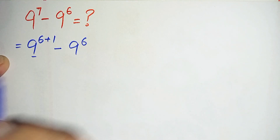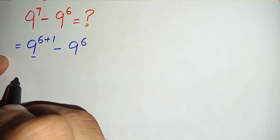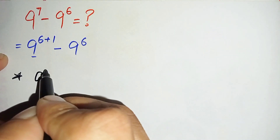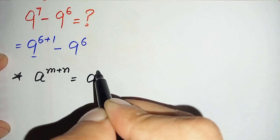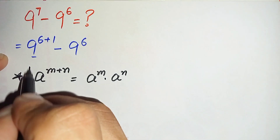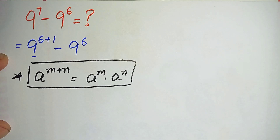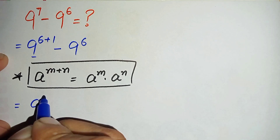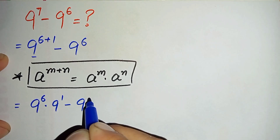Now in this one term we will use an exponential math property to split the power. The property is: a raised to power m plus n can also be written as a raised to power m times a raised to power n. So by using this exponential property, this equation will become 9 raised to power 6 times 9 raised to power 1, minus 9 raised to power 6.